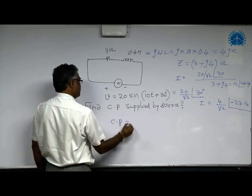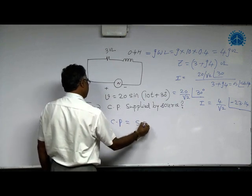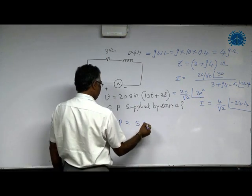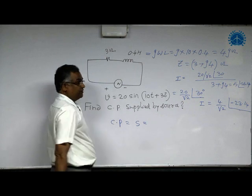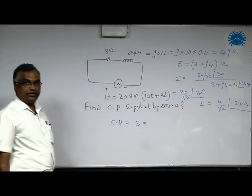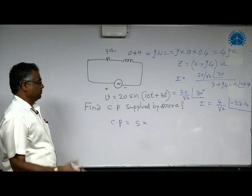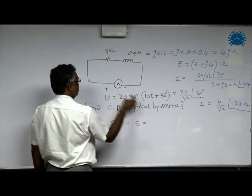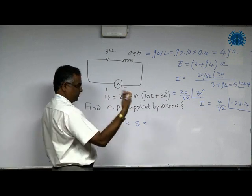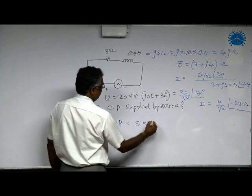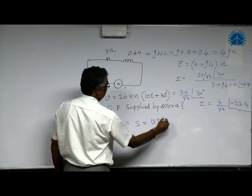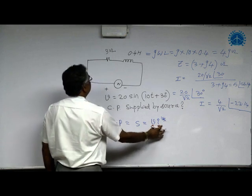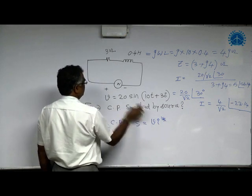This complex power is represented with S. This S has four formulas: V squared by Z, I squared Z, VI star, or P plus JQ. But since the question is power supplied by source, you cannot use V squared by Z. Only one option left is VI star. Out of four, this formula is the only one applicable because we want complex power supplied by source.